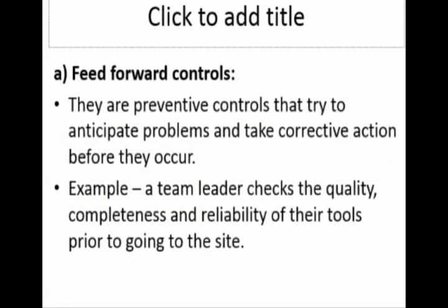Let's move on to the first type: feed forward control. Feed forward is the preventive control that tries to anticipate problems and take corrective actions before they occur. Before an event occurs or before something goes wrong, we try to take control of the situation. Before we start an event, we ensure we have reliable resources to start the work with. In other words, feed forward control involves evaluation of input and taking corrective actions before a particular sequence of operations is completed.